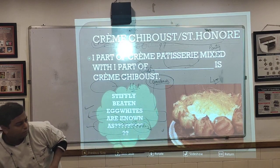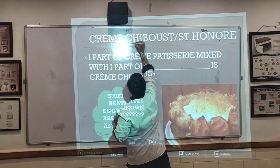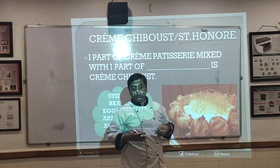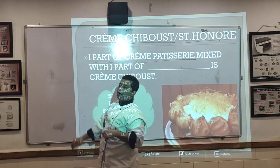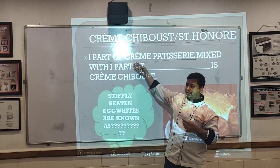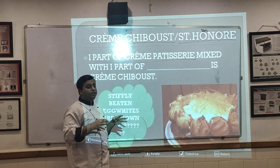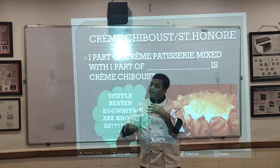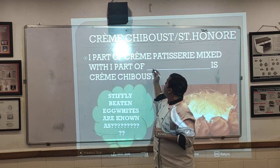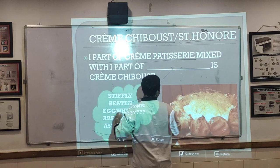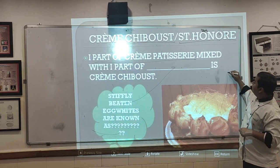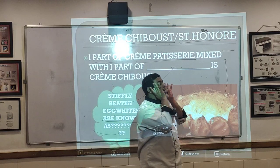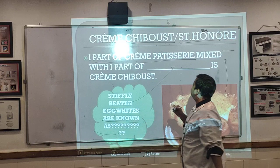Next is Crème Chiboust. This is a custard derived from Crème Patisserie — it is Crème Patisserie mixed with one part of meringue. Meringue is stiffly beaten egg whites with sugar. The name is associated with the dessert Gâteau Saint-Honoré, invented by Chef Chiboust.